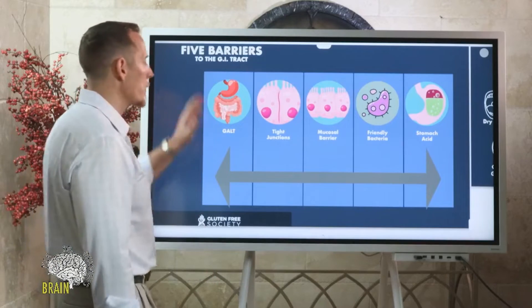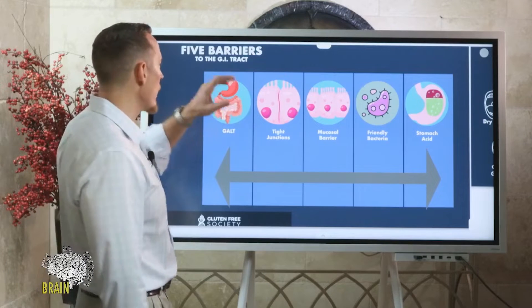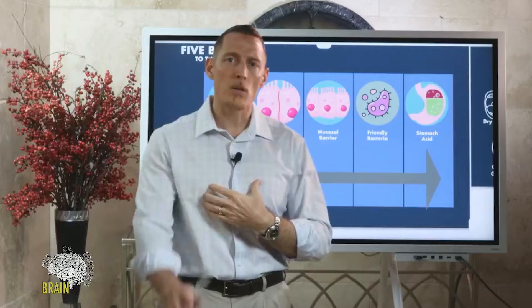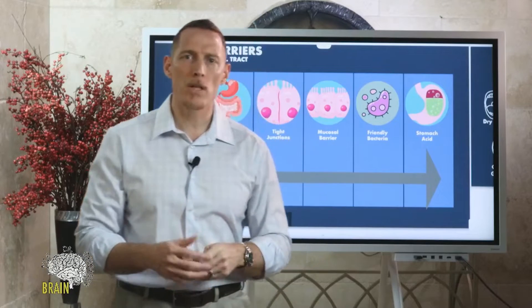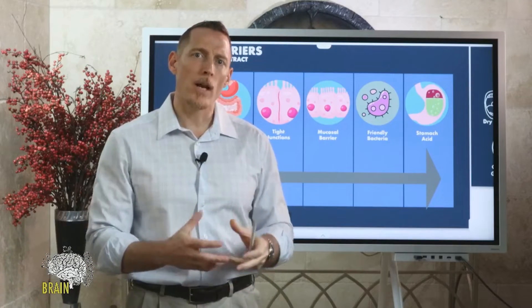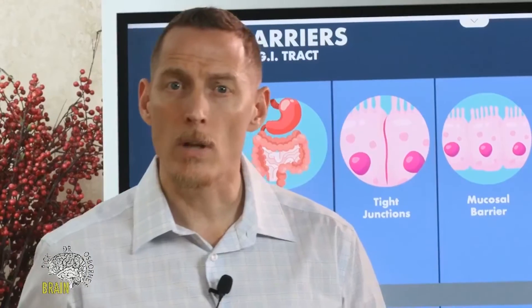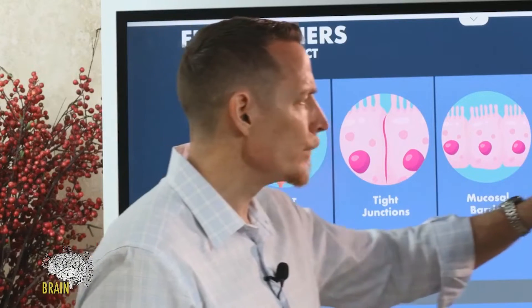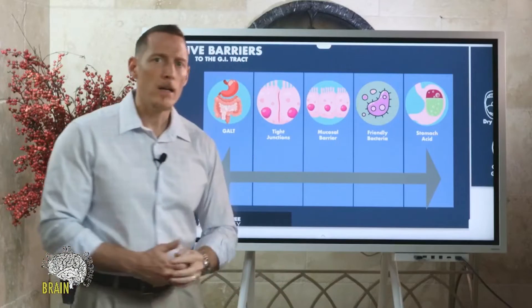Before we dive in, let's talk about functionality - the five barriers of the GI tract. It's important to understand these five barriers because they set the stage for healthy gut and healthy food tolerance. When these barriers are breached, when they're broken down, problems happen.